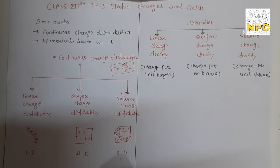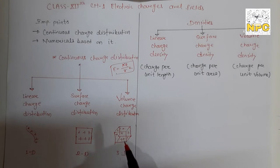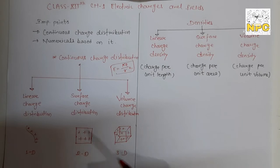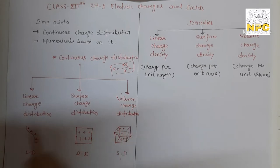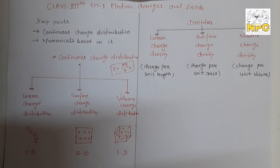The third type is volume charge distribution, which is 3D - meaning x, y, z all three planes. For example, consider a cube: a cube is 3D because it has length, breadth, and height. If charge is distributed uniformly in that volume, it is called volume charge distribution.